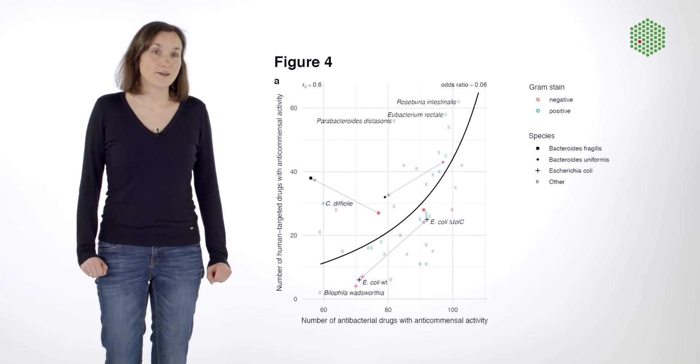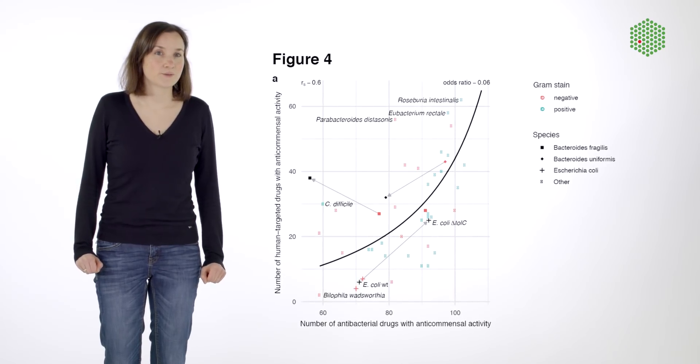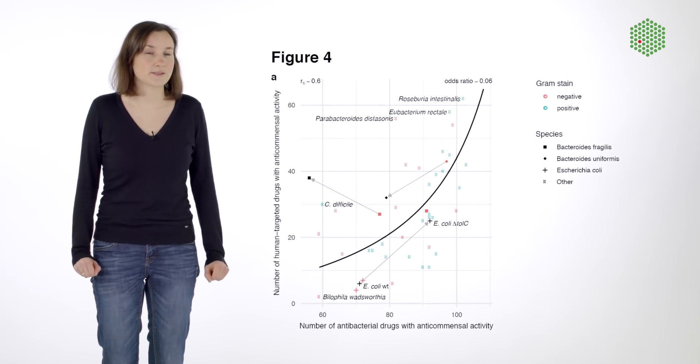We find a general trend that if a strain is more resistant to antibiotics, it's also more resistant against human-targeted drugs. And that indirectly implies the risk of acquiring an antibiotic resistance by being exposed to a human-targeted drug.